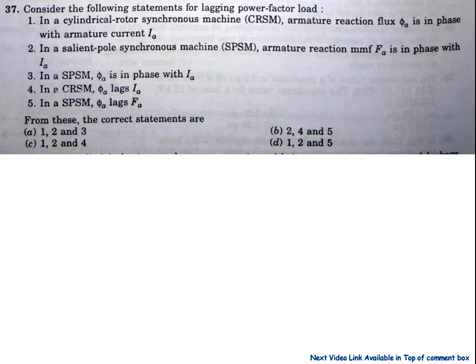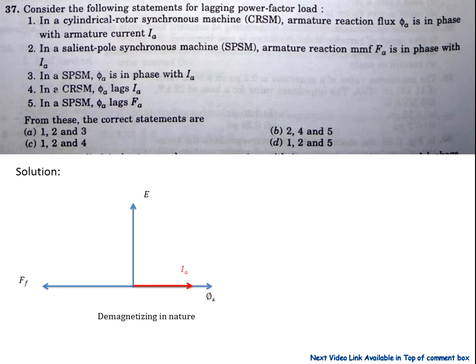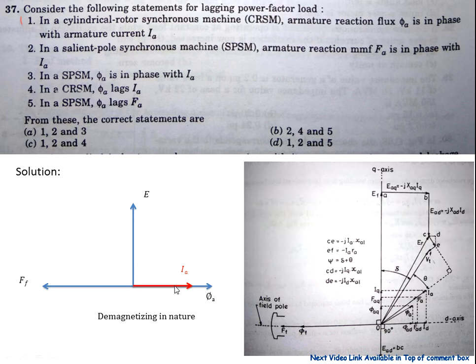Now come to question number 37: Consider the following statements for the lagging power factor load. As we know, the EMF produced is at 90 degrees lagging. At lagging power factor, the armature current is lagged by 90 degrees, then the flux is in phase with the armature current. So statement 1 is correct. In the cylindrical rotor synchronous machine, the armature reaction φA is in phase with the armature current.